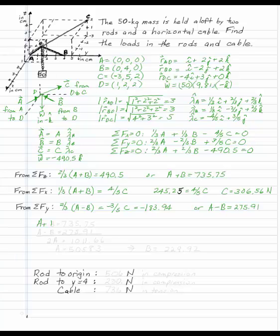Once I have a plus b is 735.75, and a minus b is 275.91, I can add these two up. And I get 2a is 1,011, or a in this case is 505.83. Substitute that back into either one of them. And b is 229.92.